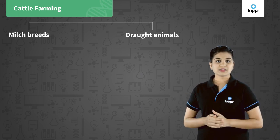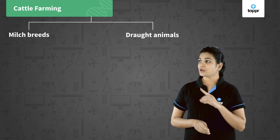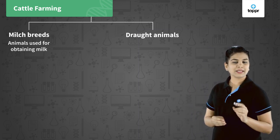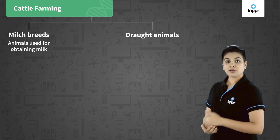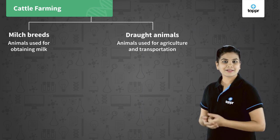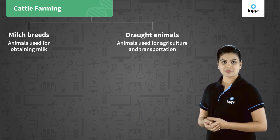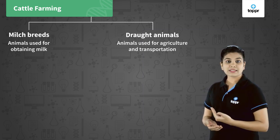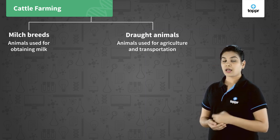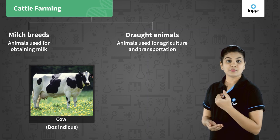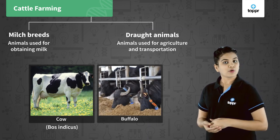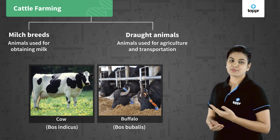Milch breeds or dairy animals are those animals which are basically used for obtaining milk, and drought animals are those which are majorly used for agriculture and transportation. Both of these usually belong to two species — either a cow, which can also be called Bos indicus, or a buffalo, which can also be called Bos bubalis.